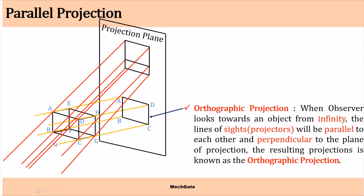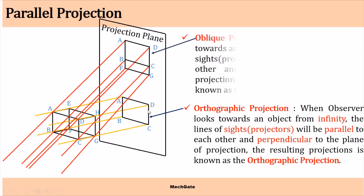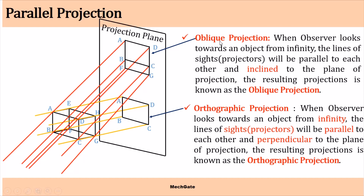If the observer is observing from this direction, he can see two faces: A B C D and the bottom face B C G F. I hope you can see the clear difference between these two. When the projector line is inclined to the projection plane it is oblique projection; when the projection line is perpendicular to the projection plane it is orthographic projection.